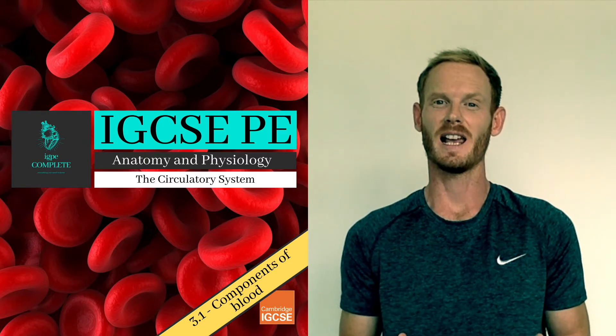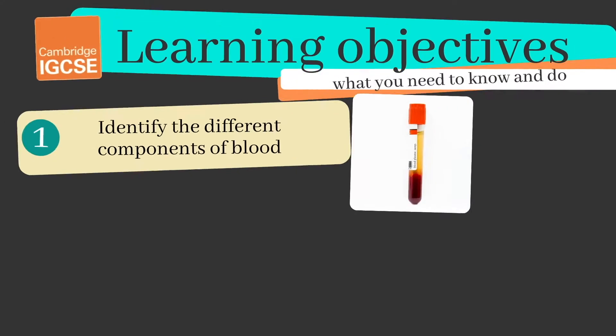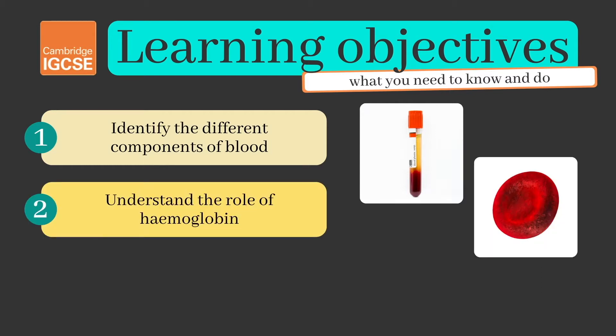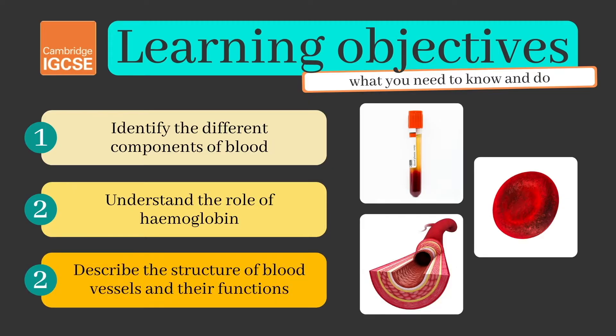As always, we'll be covering absolutely everything you need to know for your final exam. Our learning objectives today are to identify the different components of blood, to understand the role of haemoglobin, and to describe the structure of the blood vessels and their functions.